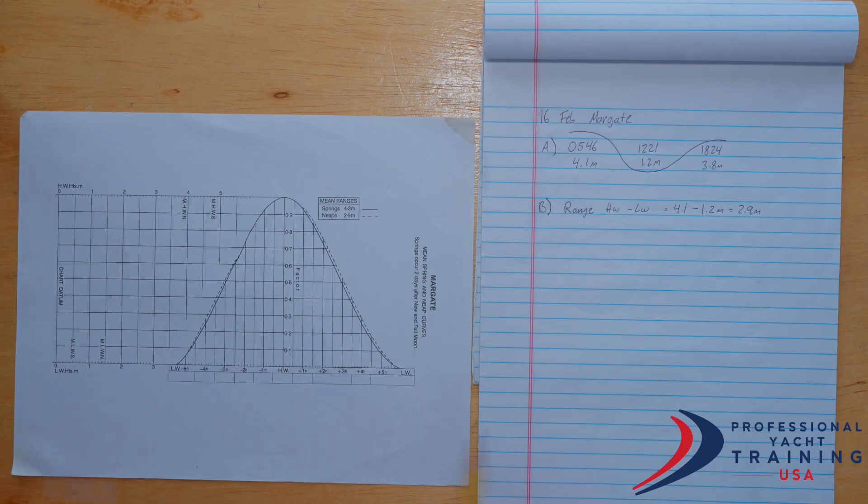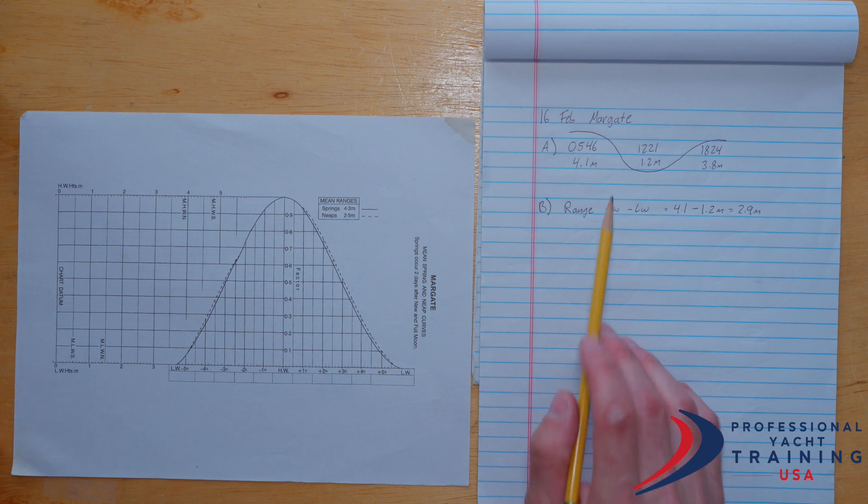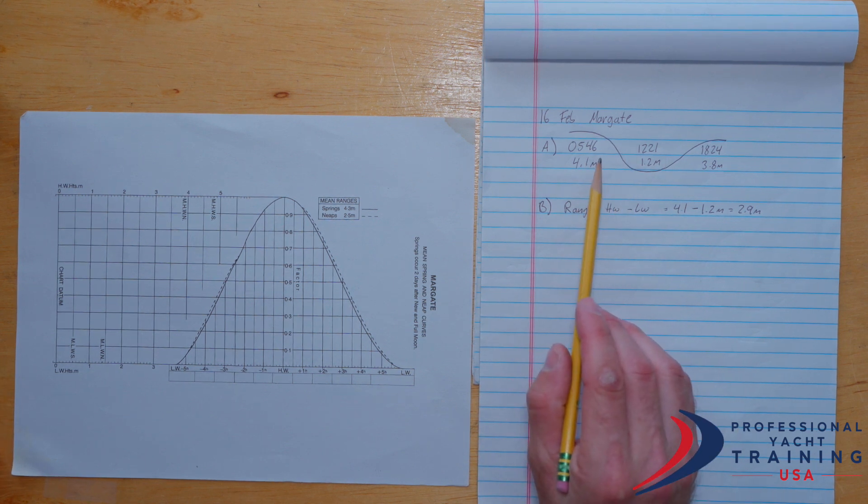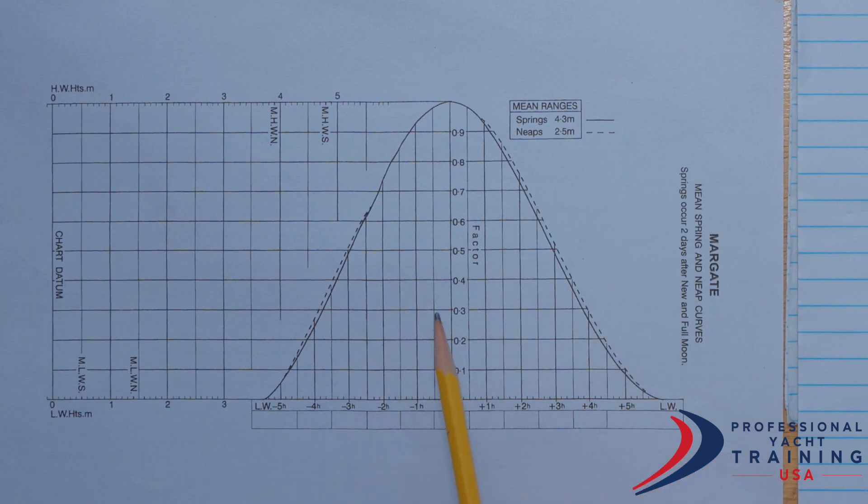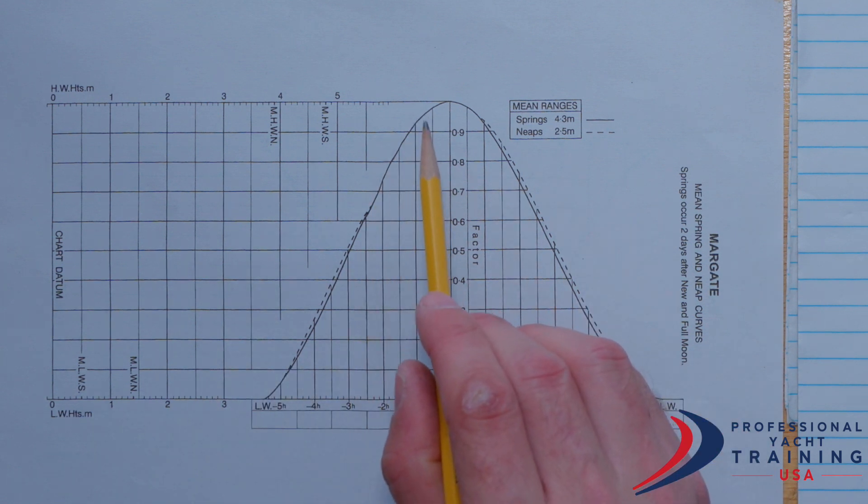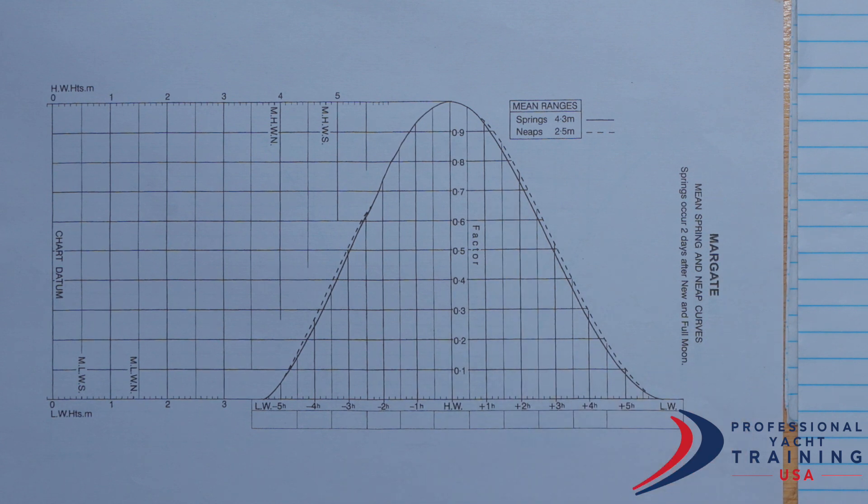And so now that we've got the tidal data for Margate on this morning falling tide, we're going to go ahead and transfer the given data over onto our tidal curve. And this tidal curve will be the tool that we utilize to find exactly when the tidal height will be two and a half meters. A couple bits of orientation to the tidal curve. This side represents a flood tide, and this side represents an ebb tide. Since we're working problem number one, we're going to be working with the ebb tide side of the curve.